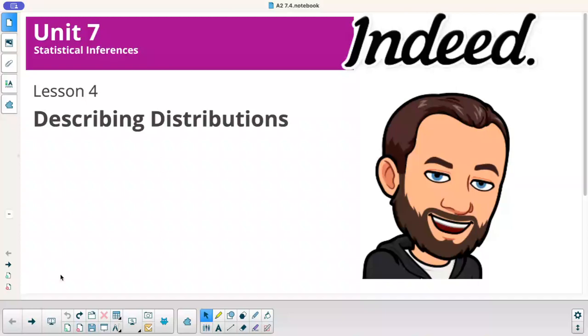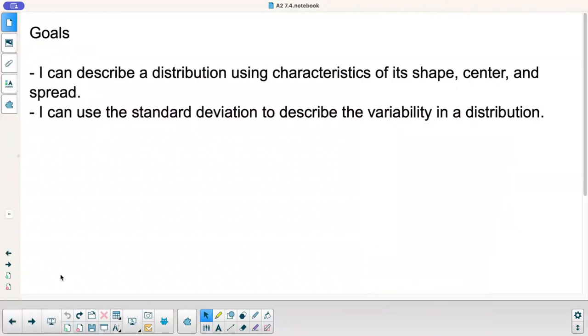Lesson to Math, Algebra 2, Unit 7, Lesson 4 is called Describing Distributions. Goal today: I can describe a distribution using characteristics of its shape, center, and spread, and I can use the standard deviation to describe the variability in a distribution.